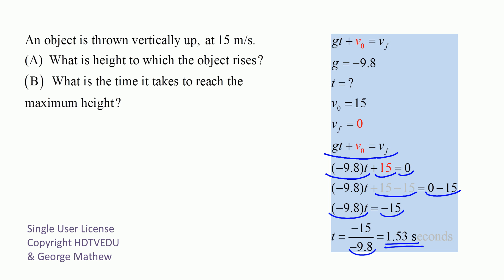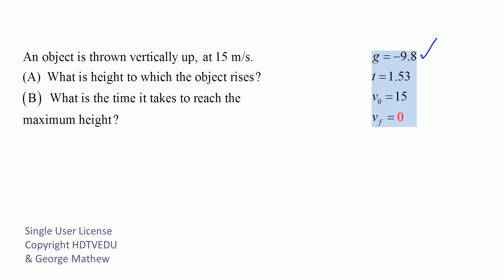The time it takes to reach the maximum height is 1.53 seconds. So if you throw something at 15 meters per second, after 1.53 seconds it reaches the maximum height. To summarize what we know: acceleration due to gravity is negative 9.8, time is 1.53 seconds, initial velocity was 15 meters per second, and at the instant it reaches the maximum height, final velocity is zero.